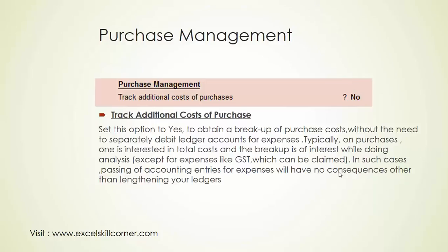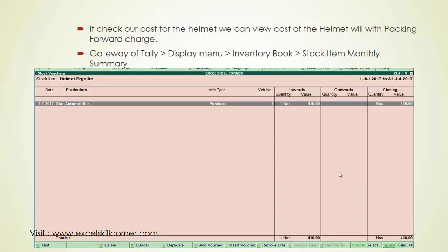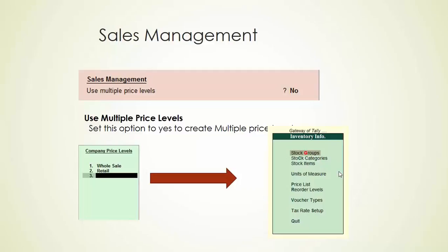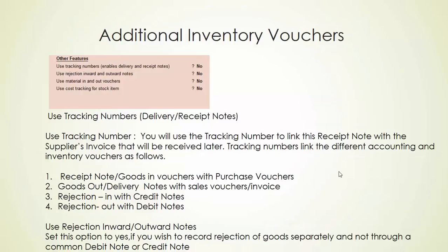We will use the inventory report, which is supplied to our inventory processor. In the stock valuation report, we will maintain the cost at a set rate. The option is Sales Management — in the sales management option, we will use multiple price levels to maintain different pricing for customers A, B, and C.